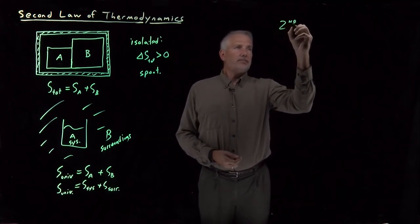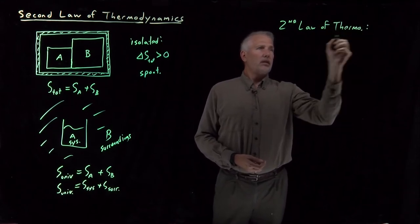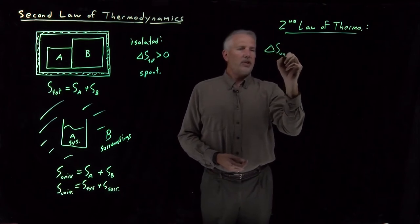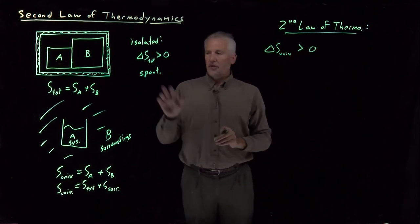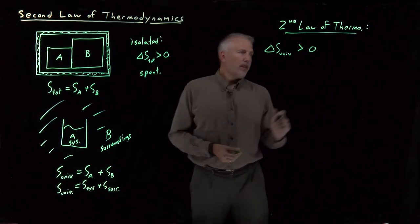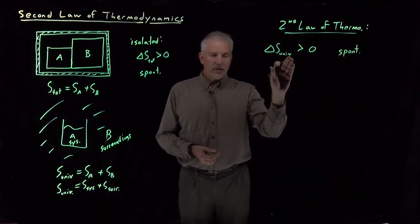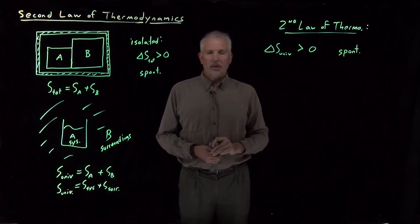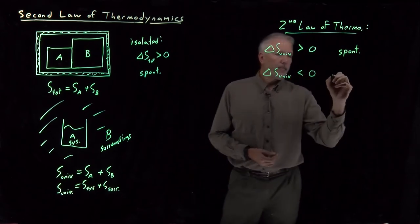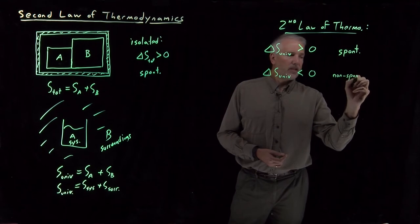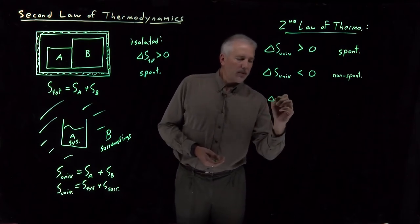That's an important enough statement that we call it the second law of thermodynamics. When the entropy change for the entire universe for a process is greater than zero — analogous to the entropy change for an isolated system being positive — that's going to be a spontaneous process. So if we can determine that the entropy of the universe is increasing for a process, we know that process is going to be spontaneous. On the other hand, if the entropy change for the universe is negative, that will be a non-spontaneous process — it won't happen.